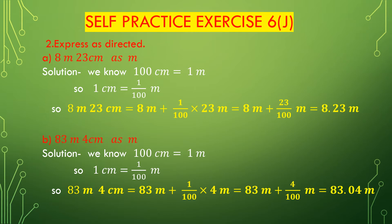Now we will solve question number 2. Question number 2 is: express as directed. Part A — 8 meters 23 centimeters as meters. We have to convert 8 meters 23 centimeters to meters. We know 100 centimeters is 1 meter, so 1 centimeter will be 1 divided by 100 meters. So, 8 meters 23 centimeters — we have to convert this to meters.